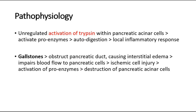For the pathophysiology of acute pancreatitis, some studies say that it is due to unregulated activation of trypsin inside the pancreatic acinar cells. This trypsin will activate the proenzymes, causing autodigestion of the pancreatic acinar cells, and there will be a local inflammatory response, causing acute pancreatitis.